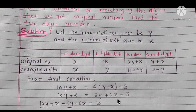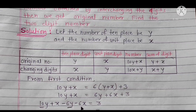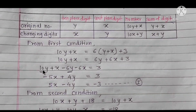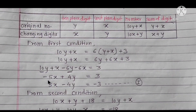Simplifying: 10Y plus X minus 6Y minus 6X equals 3, giving 4Y minus 5X equals 3. Multiplying by minus 1: 5X minus 4Y equals minus 3. This is Equation 1.